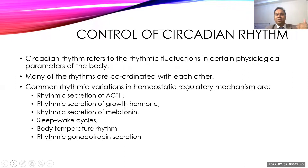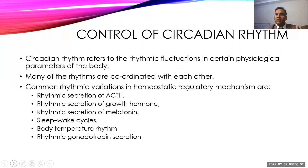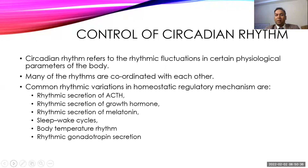Looking at circadian variations: ACTH secretion is highest in the early morning around four to six o'clock and low in the late afternoon or evening. Growth hormone secretion is very high during deep sleep (stage four). Melatonin also follows a rhythmic pattern. Body temperature is lower in the early morning and highest in the late evening. Gonadotropin hormone secretion follows both a daily rhythmic pattern and a monthly pattern — the menstrual cycle.